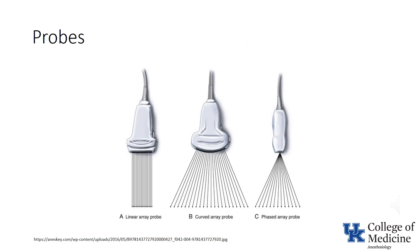Although lung ultrasound may be performed with a linear, curvilinear, or phased array probe, the linear probe is best when examining more shallow structures — for example, the pleura looking for sliding — and the curvilinear is best when looking for deeper structures, for example when looking for B-lines.